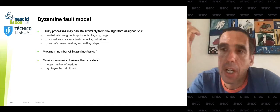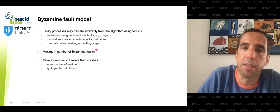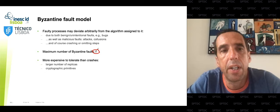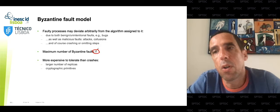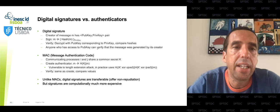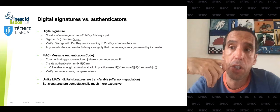Byzantine fault tolerance doesn't work if all replicas are behaving arbitrarily, so you must assume a maximum number of Byzantine faults expressed as a failure threshold F. These protocols are typically more expensive than crash fault tolerant ones: they require more replicas and the use of cryptographic primitives.